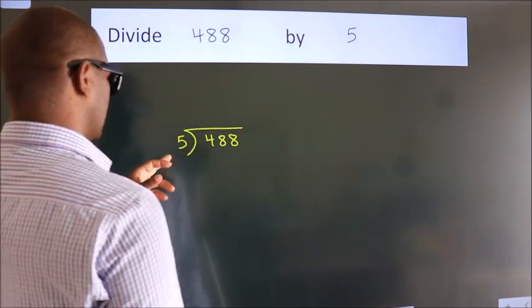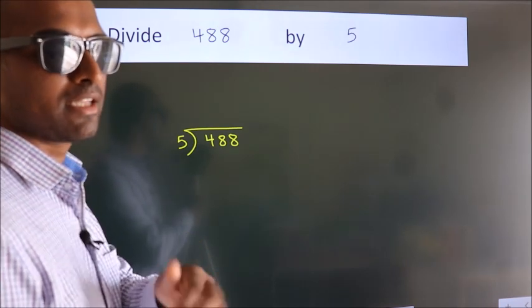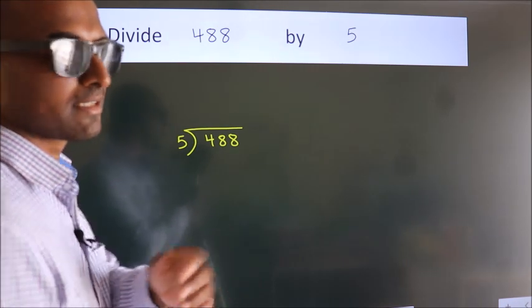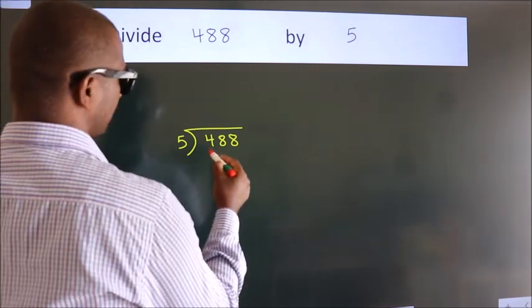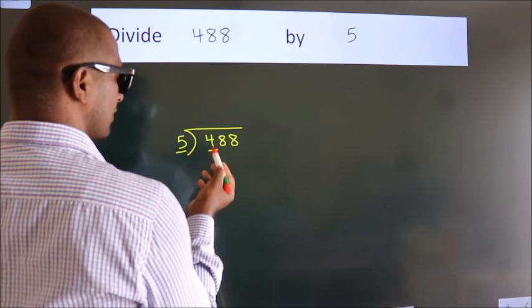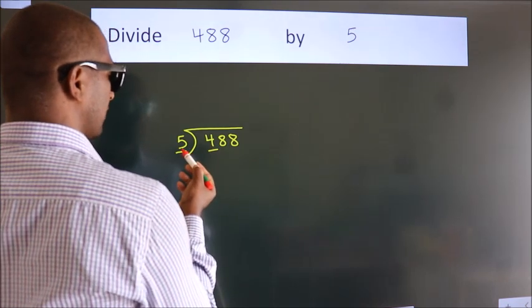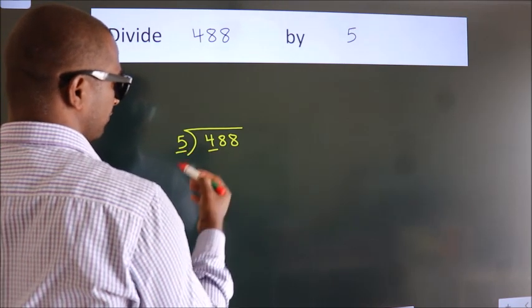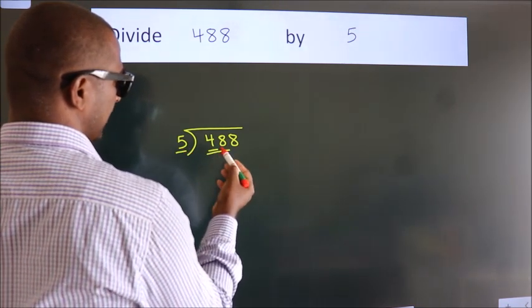This is your step 1. Here we have 4, here 5. 4 is smaller than 5. So we should take two numbers: 48.